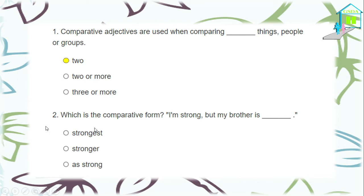Second question: which is the comparative form? 'I'm strong, but my brother is ___' — strongest, stronger, or as strong? The answer is 'stronger.' So: I'm strong, but my brother is stronger. As we have seen, we add -ER at the end of the adjective to make the comparative.